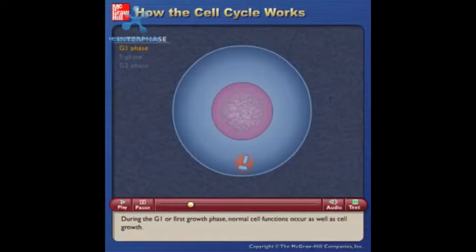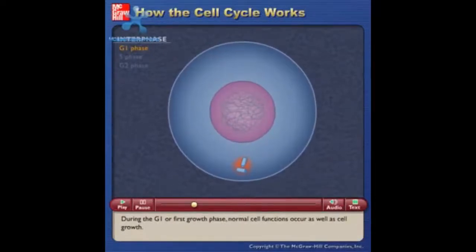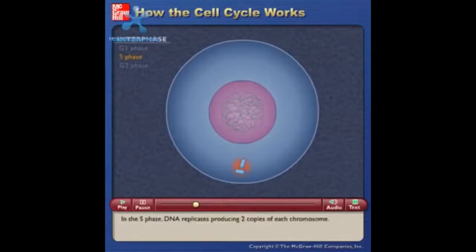During the G1 or first growth phase, normal cell functions occur as well as cell growth. In the S phase, DNA replicates, producing two copies of each chromosome.